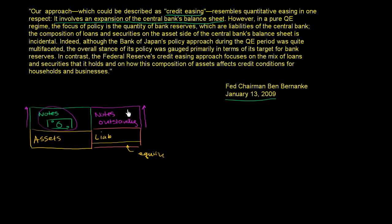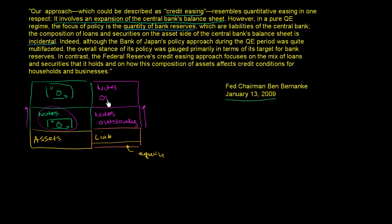Quantitative easing is just this idea of expanding that balance sheet. However, in a pure quantitative easing regime, the focus of policy is the quantity of bank reserves, which are liabilities of the central bank. The composition of loans and securities on the asset side of the central bank's balance sheet is incidental. So he's saying in traditional quantitative easing, the central bank says, 'I just care about printing money.' So their liabilities increase accordingly — notes outstanding — and maybe this is another trillion dollars they're printing. All the central bank cares about is printing this money and getting it out there into circulation, and they don't really care what they're using this money for.